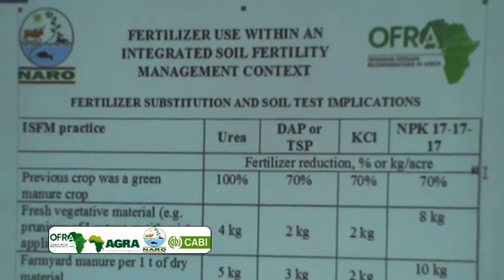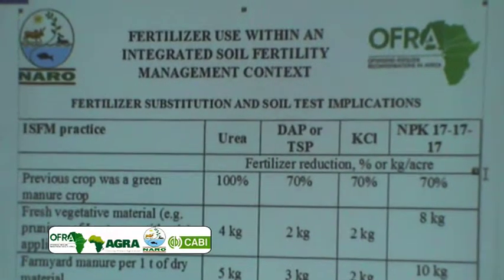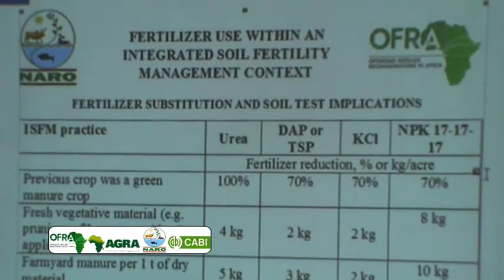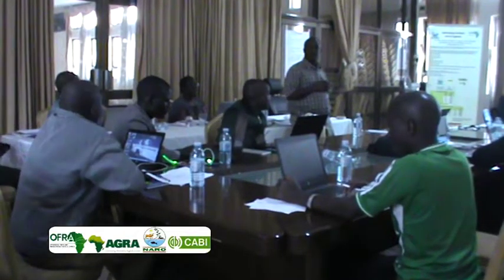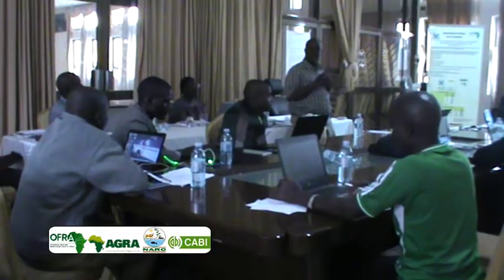After the training, extension officers confirmed they had gained more knowledge and skills in using the fertilizer optimization tool. In previous trainings they only looked at photos, but this time they went further into designing the application process, the calibration, and how to advise farmers on how best to apply fertilizers.